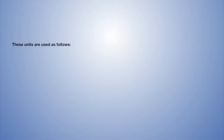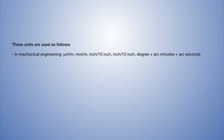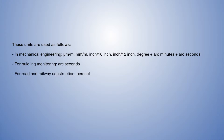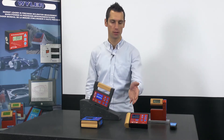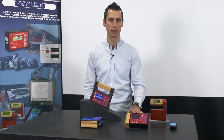These units are used as follows. In mechanical engineering: µm per meter, mm per meter, inches per 10 inches, inches per 12 inches, and arcus degrees, minutes, seconds. For building monitoring: arcus seconds. For road and railway construction: percent. In science: gon. In the armed forces: artillery per mil. All of these units can be shown on a Wheeler display device — in our example, a blue meter Sigma.